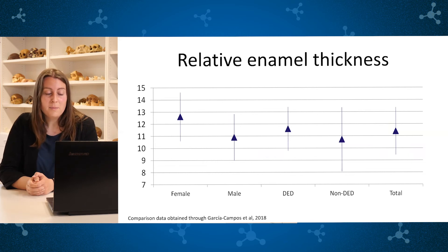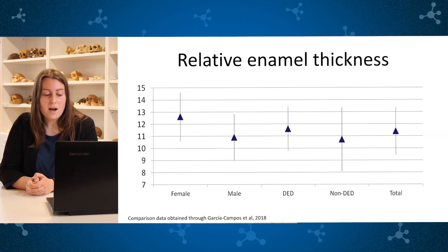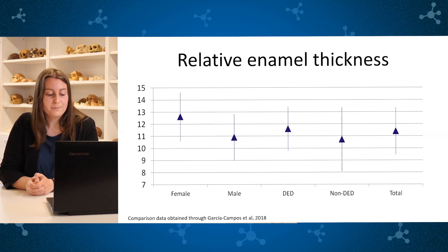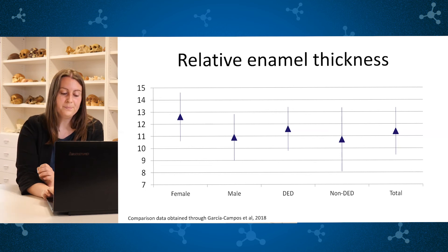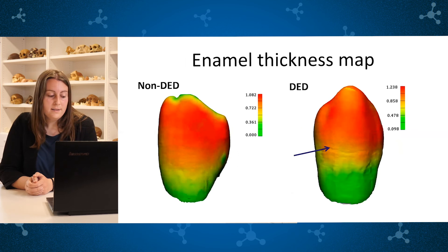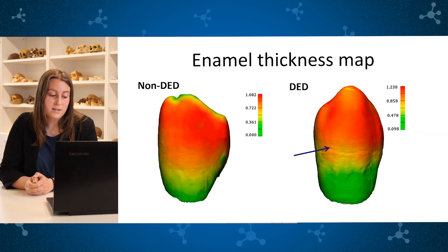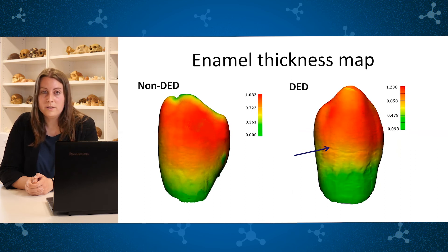On the other hand, for the relative enamel thickness — in which the enamel-dentine junction is taken into account — the values of San Pablo are located between the values of female and male individuals of Garcia Campos. Finally, when we look at the distribution of enamel thickness in canines with and without enamel defects, the distribution varies as we would expect.